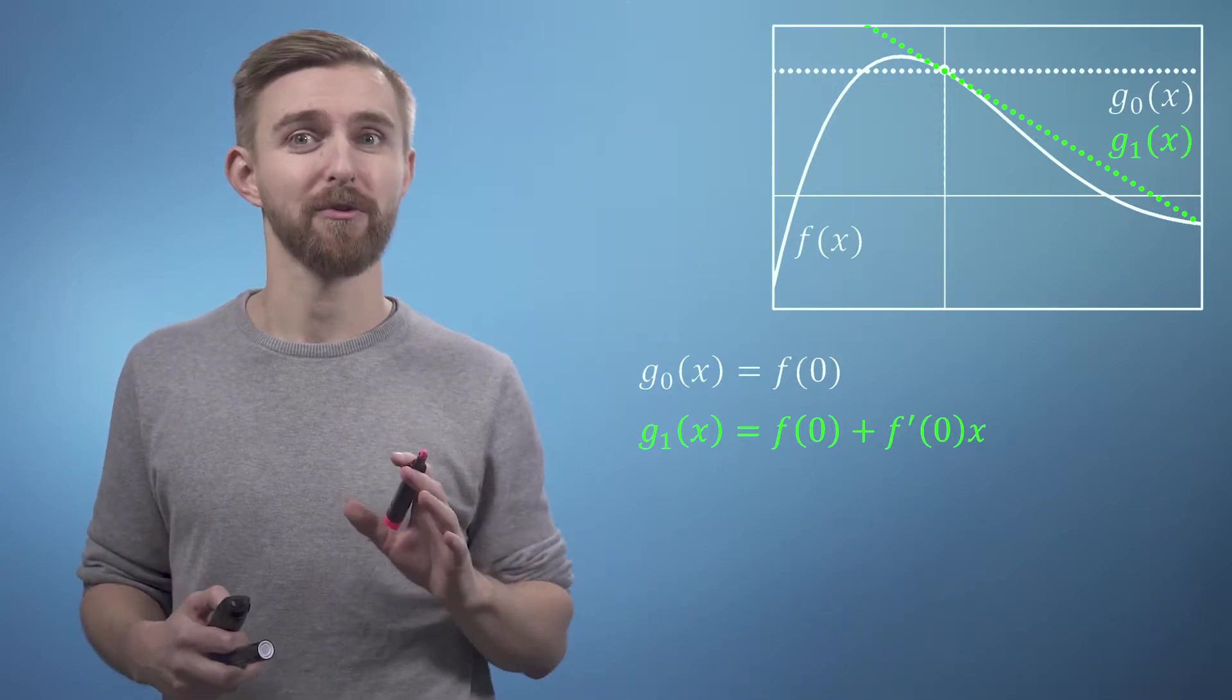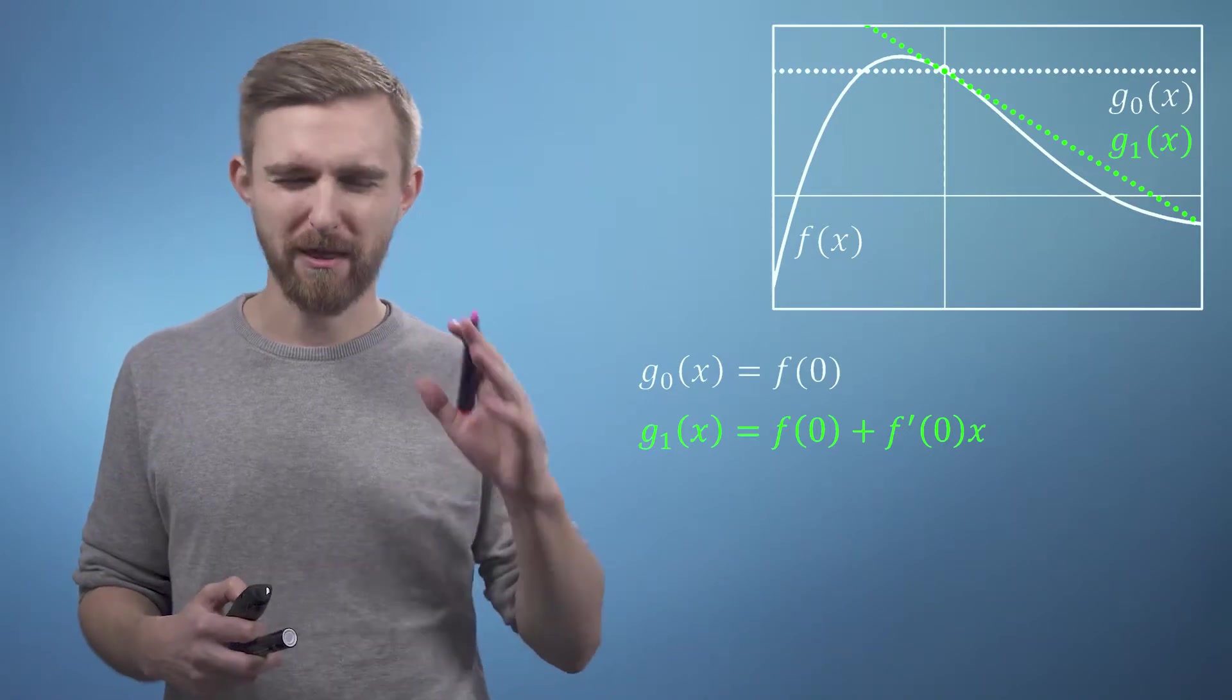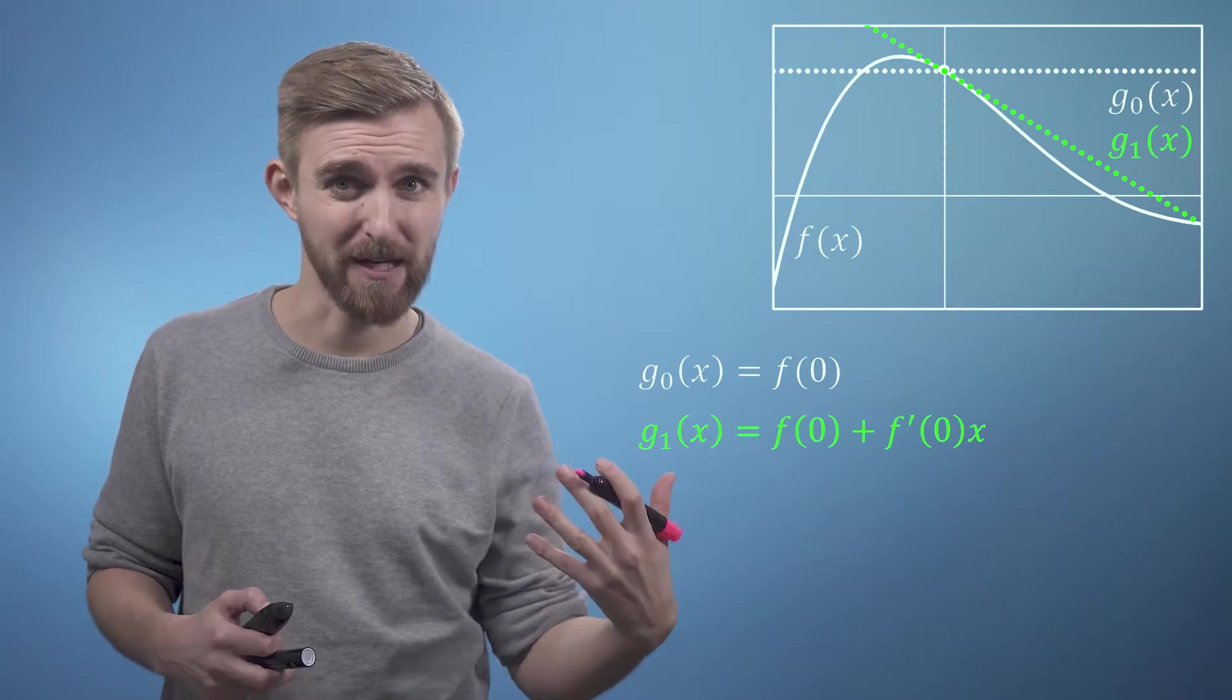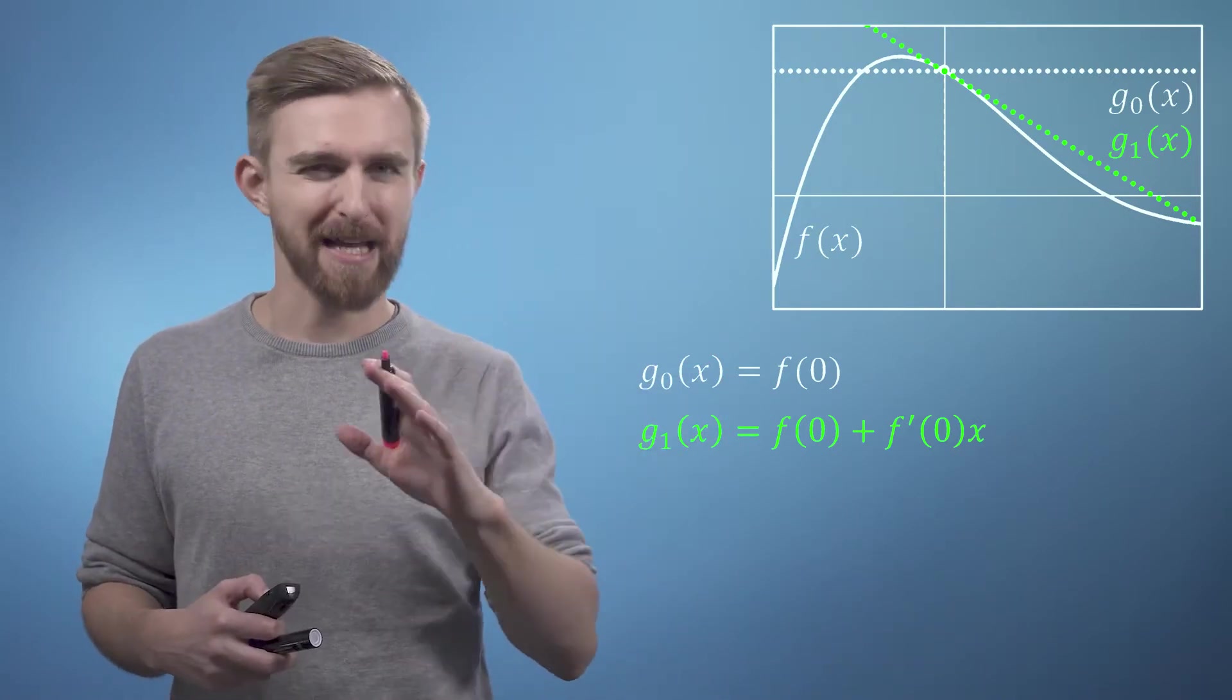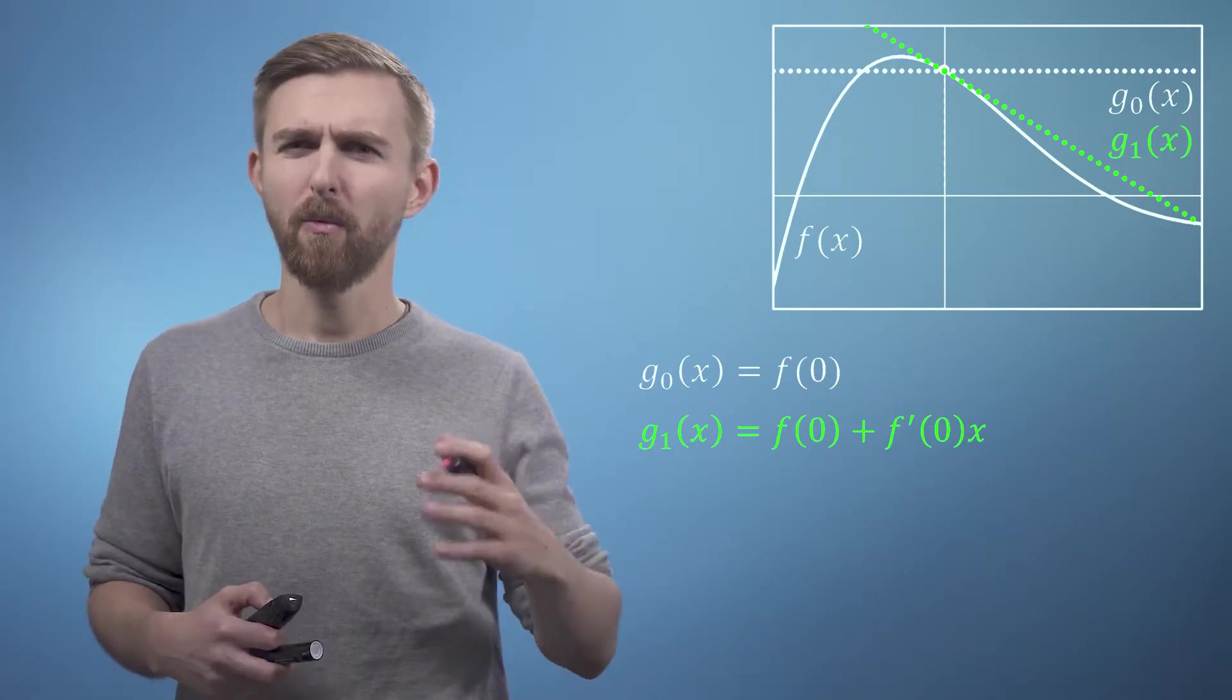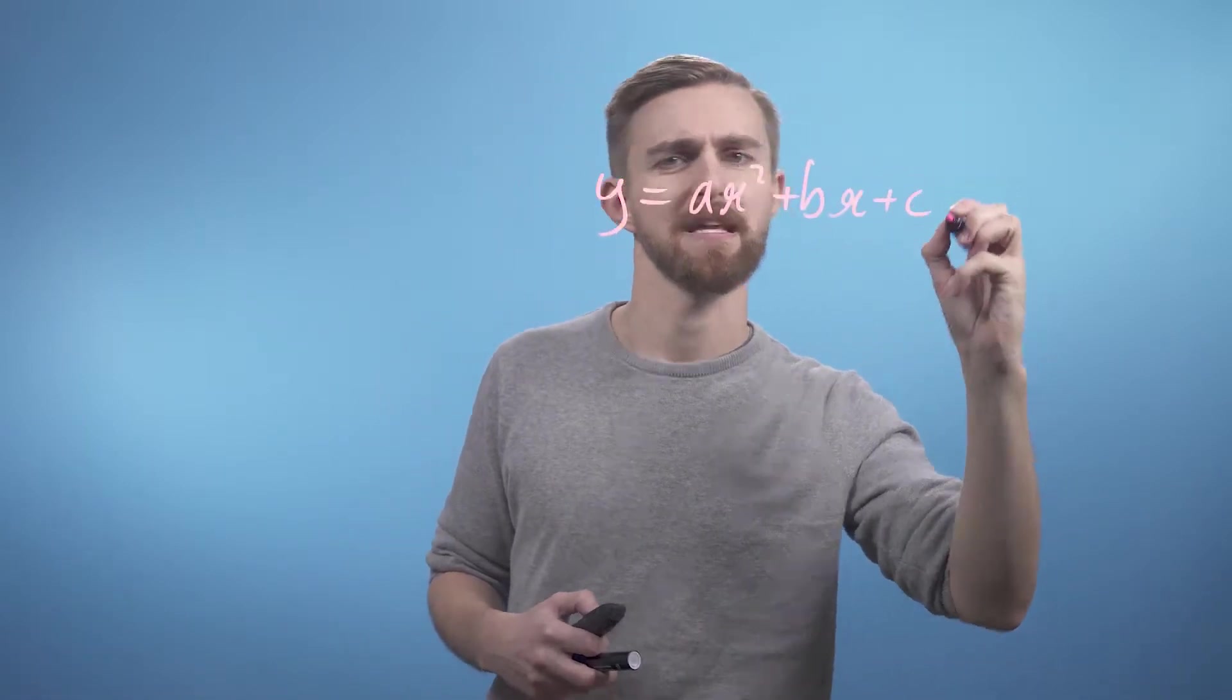Moving quickly onto our second order approximation, g2 of x, we're going to use three pieces of information: f of 0, f dash of 0, and the second derivative, f double dash of 0. Now, to have a function that can make use of these three pieces of information, we're going to need a quadratic equation. So we can write y equals ax squared plus bx plus c.